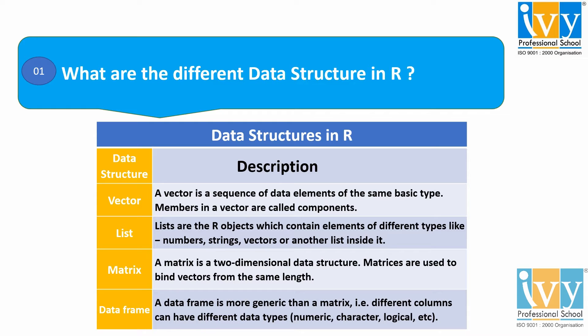A vector is a sequence of data elements of the same basic type. All the members in a vector are called components. A list is an R object which can contain elements of different types like numbers, strings, vectors, and even another list inside it.